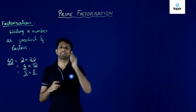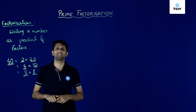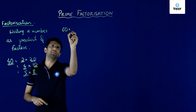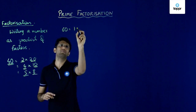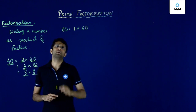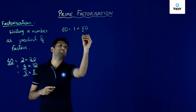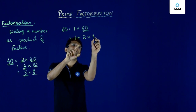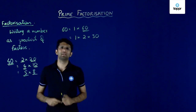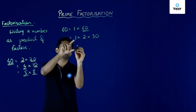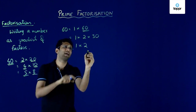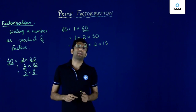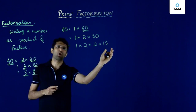However, here we have a term prime factorization. If you look at the number 60, note that 60 can be written as 1 x 60. But further, this 60 can be split and I can write 60 as 1 x 2 x 30. Similarly, I can retain those and write 30 as 2 x 15. So every time I am writing a number as a product of its factors.